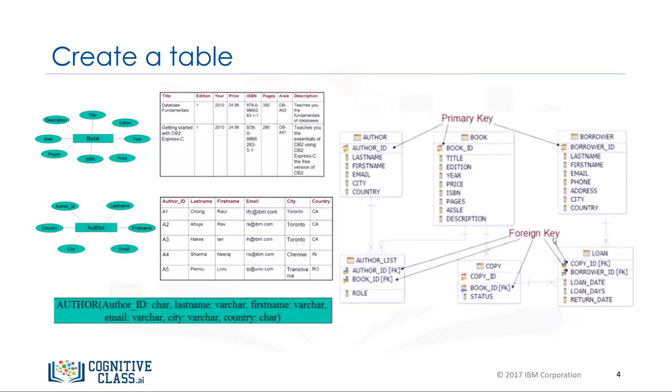Using the author entity as the example, assign data types to the attributes of the table. In this example, the following data types are used: CHAR is a character string of a fixed length. VARCHAR is a character string of a variable length. In addition, the author_ID attribute is assigned as the primary key,